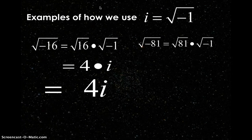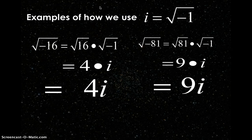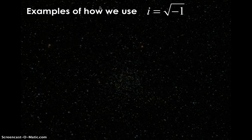This opens up doors to us and enables us to solve problems we thought we couldn't before, like the square root of negative 16. We can rewrite that as the square root of 16 times the square root of negative 1. Since the square root of negative 1 is rewritten as i, that's 4 times i, or 4i. Square root of negative 81 — same idea. The square root of 81 is 9, so we take that negative piece out, write it as i, and get 9i.